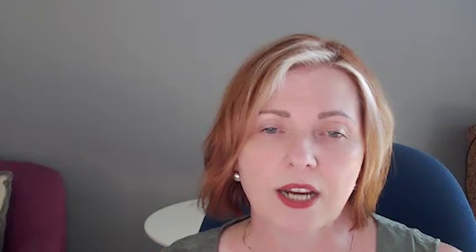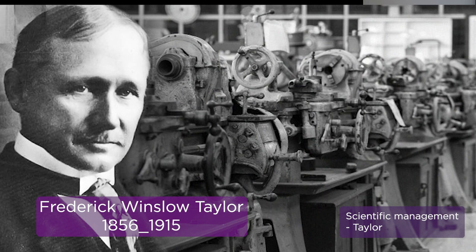Scientific management emphasises scientifically determined jobs and practices as the way to improve efficiency and labour productivity. In the late 1800s, a young engineer, Frederick Winslow Taylor, proposed that workers could be retooled like machines, their physical and mental gears recalibrated for better productivity. Taylor insisted that improving productivity meant that management itself would have to change, and further, that the manner of change could be determined only by scientific study — hence the label scientific management.